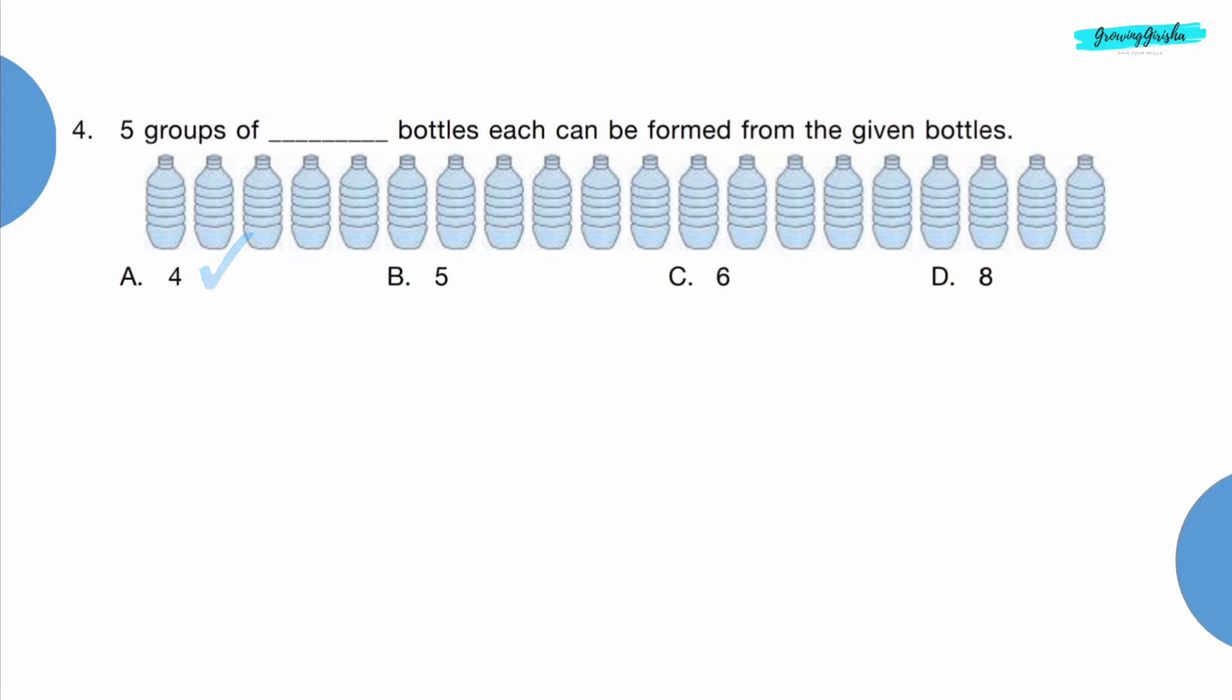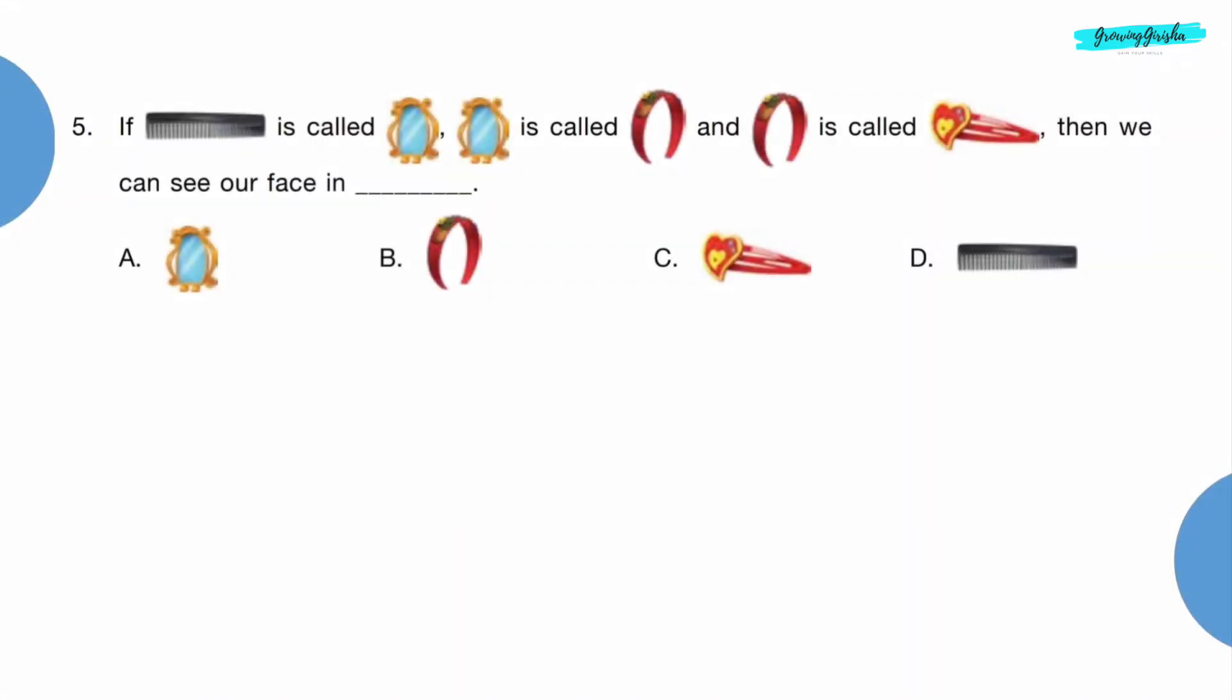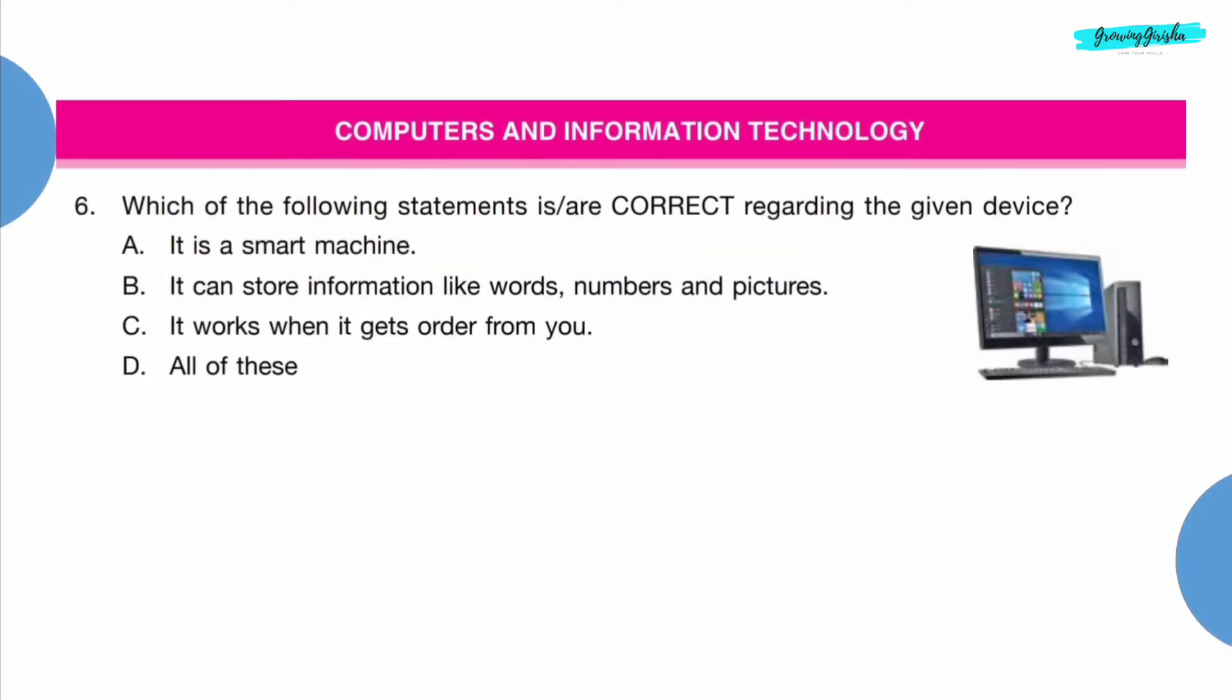The total number of bottles are 20, and if we divide it by 5 we get 4. So option A is the correct answer. Question 5: If comb is called mirror, mirror is called hairband, and hairband is called clip, then we can see our face in dash.